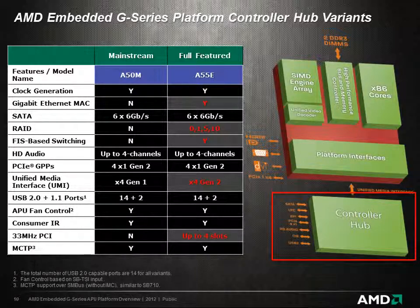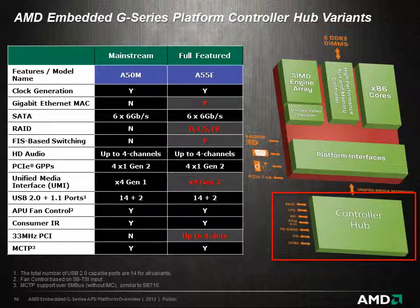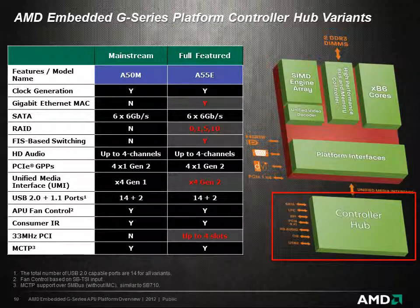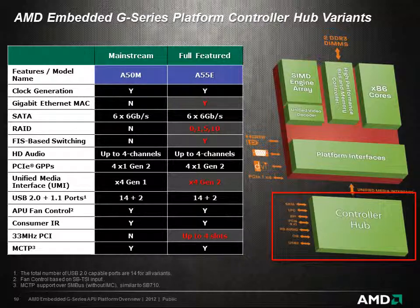For applications that require additional functionality, the A55E is available, with an integrated Gigabit Ethernet MAC with RAID support and FIS-based switching, higher bandwidth UMI interface between the APU and FCH for I/O-intensive applications, and a full 32-bit, 33 MHz legacy PCI interface supporting up to four masters.